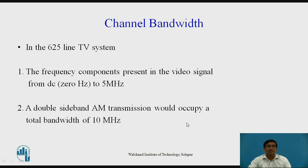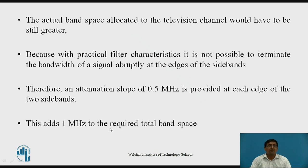In the 625-line TV system, frequency components present in the video signal range from DC to 5 MHz. A double sideband AM transmission would occupy a total bandwidth of 10 MHz — 5 MHz for the upper sideband and 5 MHz for the lower sideband. Because practical filter characteristics cannot terminate bandwidth abruptly at the edge of sidebands, an attenuation slope of 0.5 MHz is provided at each edge, adding 1 MHz total, giving a required band space.